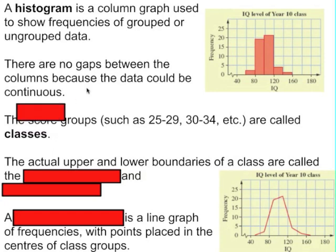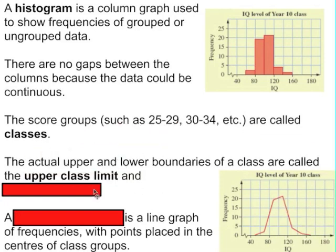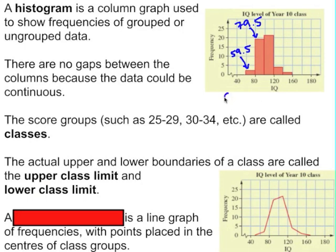The score groups are called classes and the classes for this chart appear to be 60 to 80, 80 to 100. If we look closely you can see that the actual upper and lower boundaries of the class are just before the 80, just before the 60. These values are called the upper class limit and the lower class limit. And so our classes here are 60 to 79, 80 to 99 and so on.